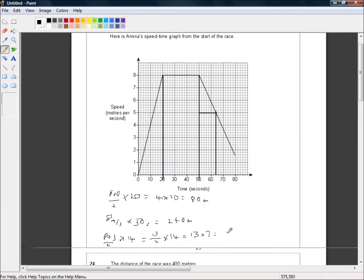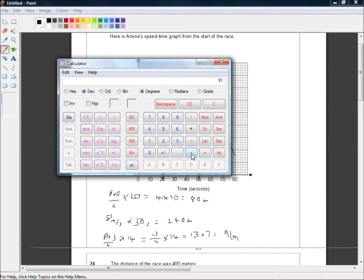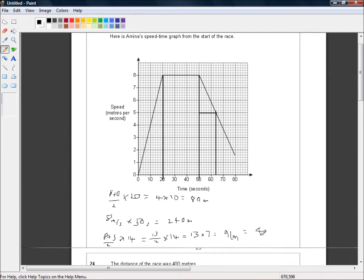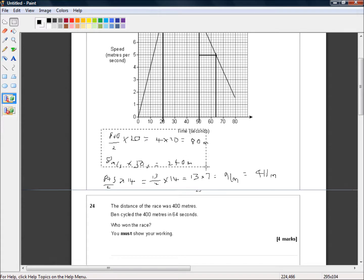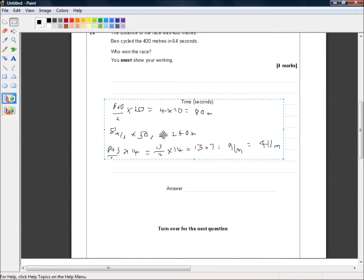And now here's where we find out who won the race. If 80 plus 240 plus 91 is bigger than 400 then Amina will have won the race. And because we're calculating Amina's speed we're obviously rooting for Amina. 80 plus 240 plus 91 equals 411 metres. So she travelled 411 metres in the time it took Ben to travel 400 metres. So Amina won the race. And of course you would want to write your calculations in here. So the answer is Amina. Congratulations Amina.